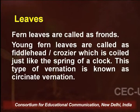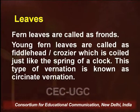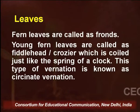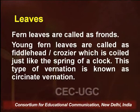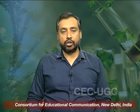Now let us talk about leaves. Fern leaves are also called fronds. Young fern leaves are called fiddleheads or croziers, which are coiled just like the spring of a clock. This type of vernation is known as circinate vernation. Vernation is the arrangement of young budding leaves at the apical portion of any stem. All pteridophytes, especially ferns, show this unique kind of vernation; this structure is also termed the crozier.